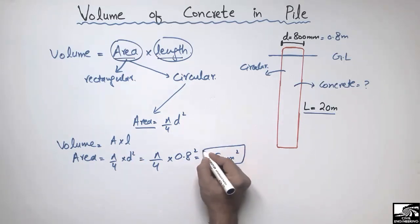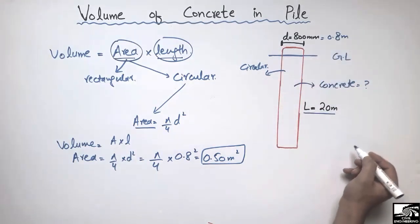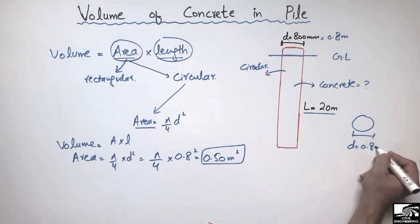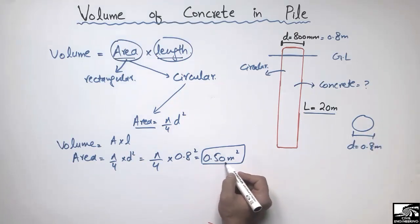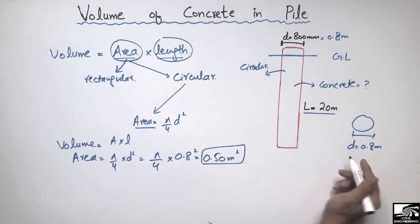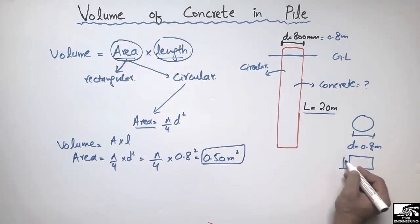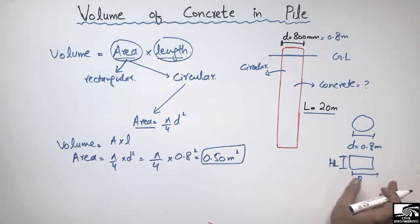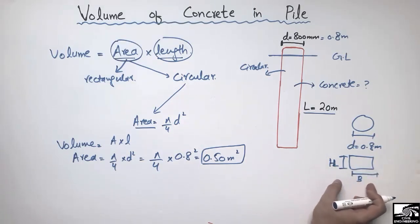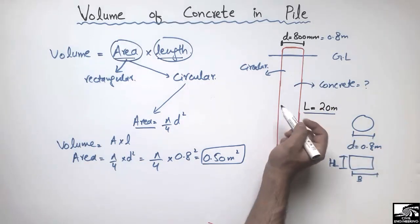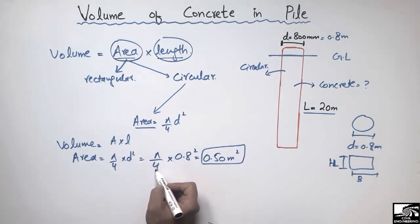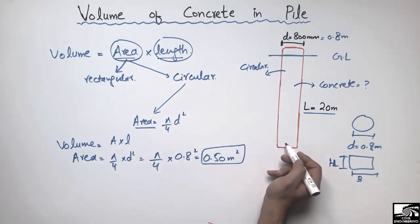So the area of the pile with a diameter of 0.8 meters comes out to be 0.50 square meters. If it were a rectangular pile, we would need the width and height dimensions to multiply together to get the area. But in this case it's a circular pile, so we use π/4 × d² to get the area in square meters.